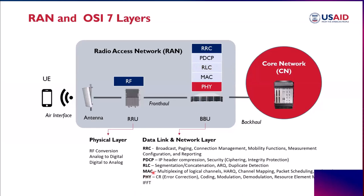The RLC, or Radio Link Control Protocol, handles segmentation, concatenation, automatic repeat request, and duplicate detection. For the MAC — Medium Access Control — multiplexing of logical channels happens here. If you're familiar with carrier aggregation, this is where it occurs at the MAC layer. It also handles hybrid automatic request, channel mapping, packet scheduling, and quality of service. At the bottom is the physical layer, which handles error correction, cyclic redundancy checking, coding, modulation schemes like 16QAM, 64QAM, or QPSK, demodulation, and the resource element mapper with inverse fast Fourier transform.